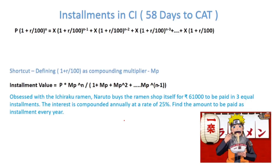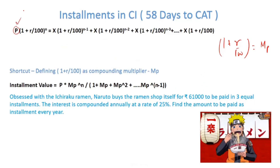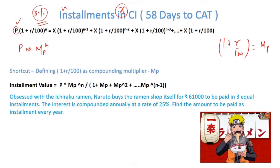Now let's look at installments under compound interest — the concept remains the same. Define the compounding multiplier as (1 + r/100). For example, 100 rupees at 10% compound interest becomes 110 in year one, then 121 in year two — that is 100 × (multiplier)^2. If you take principal P at r percent for n years, your amount becomes P × (1 + r/100)^n. The first installment, paid at the end of year one, is then invested at r percent compounded annually.